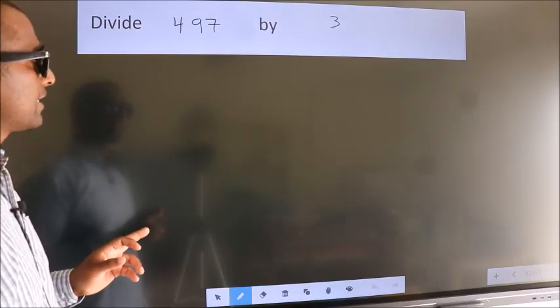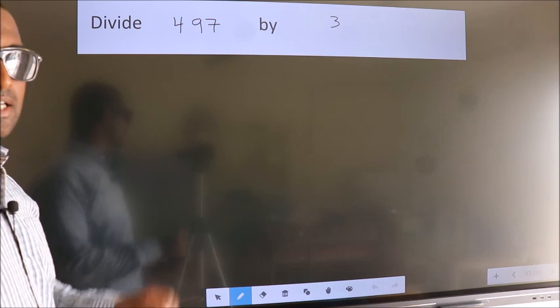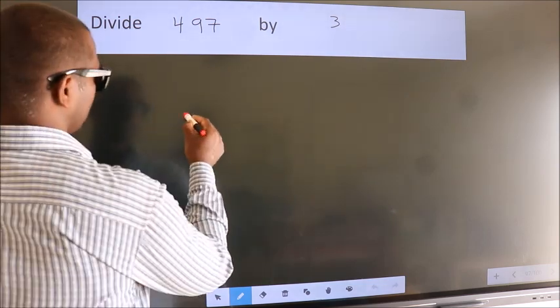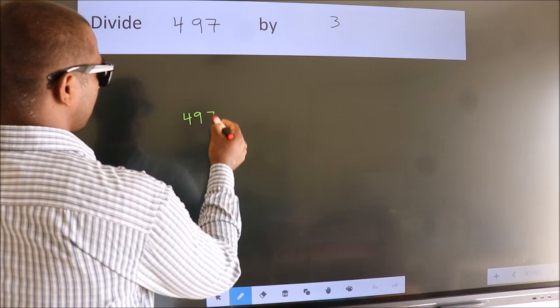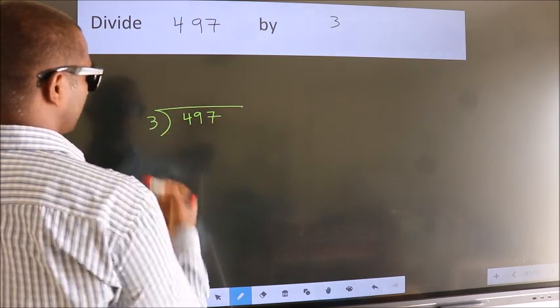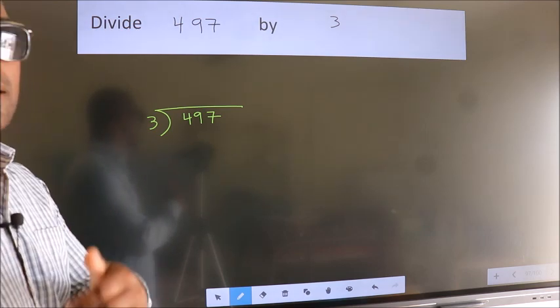Divide 497 by 3. To do this division, we should frame it in this way. 497 here, 3 here. This is your step 1. Next.